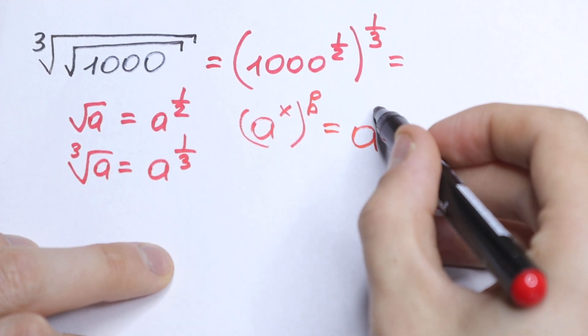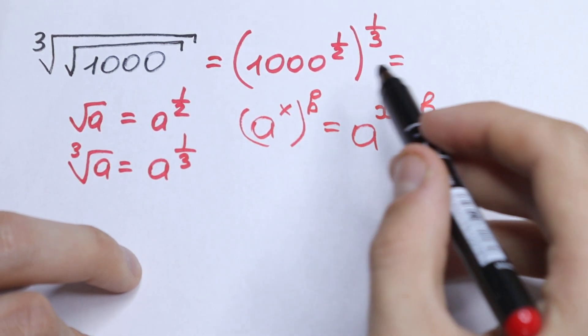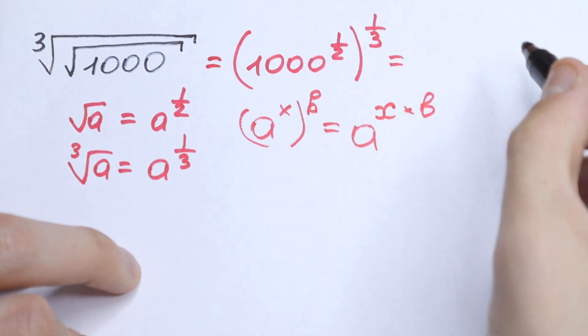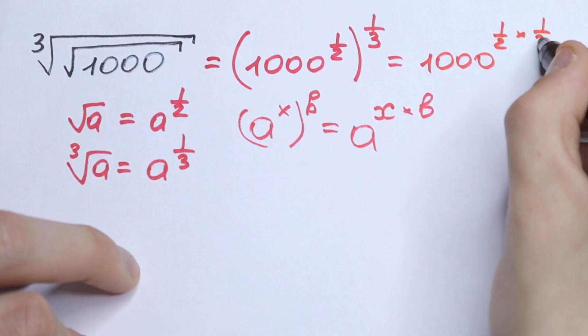we can write it as a to the power x times b. So we just multiply our powers. And right here this is our case because we just multiply 1/2 times 1/3.